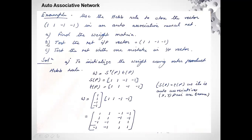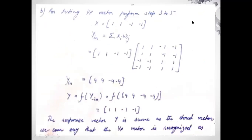For the second part, we test with the net input vector X equal to [1, 1, -1, -1]. To find the output, Y_in equals the summation of X_i times W_ij. X_i is [1, 1, -1, -1] and W_ij is the weight matrix we already calculated. Taking the product gives us the result [4, 4, -4, -4].